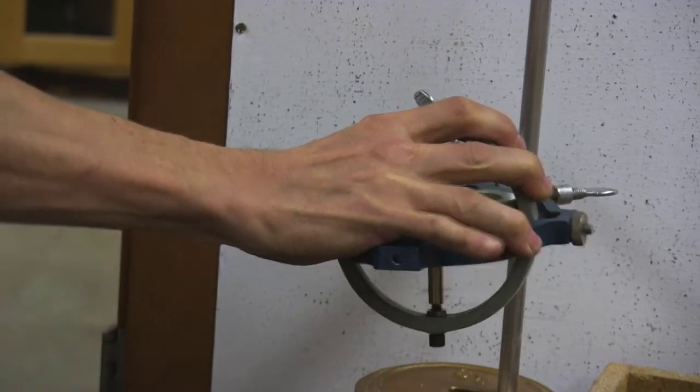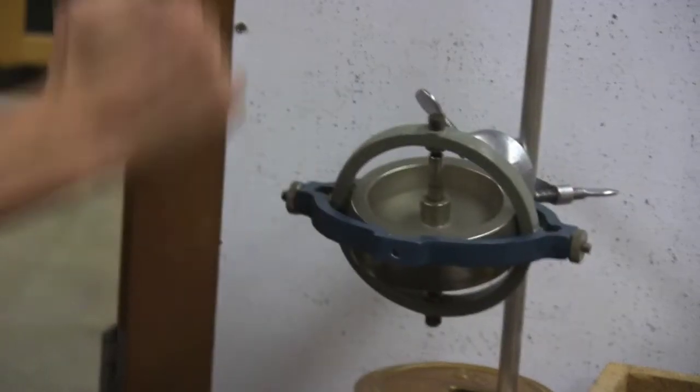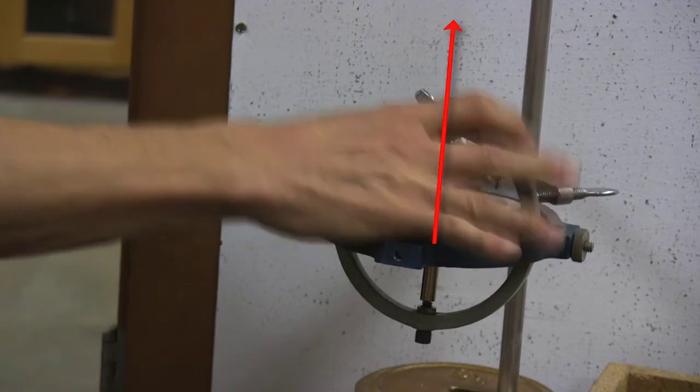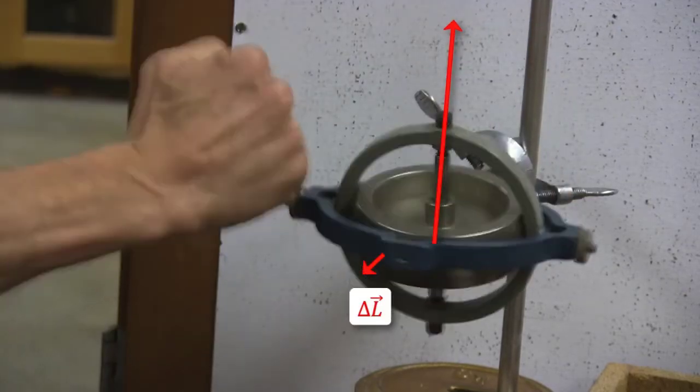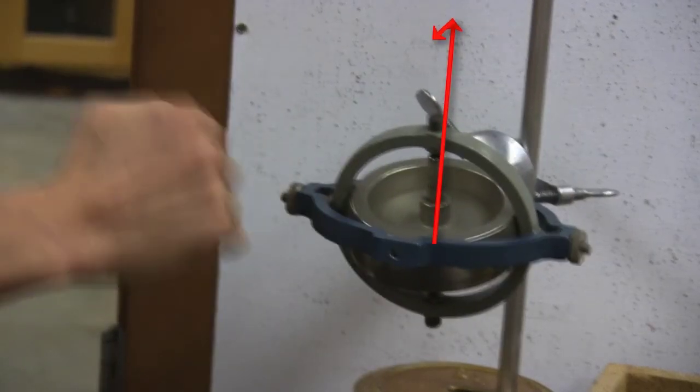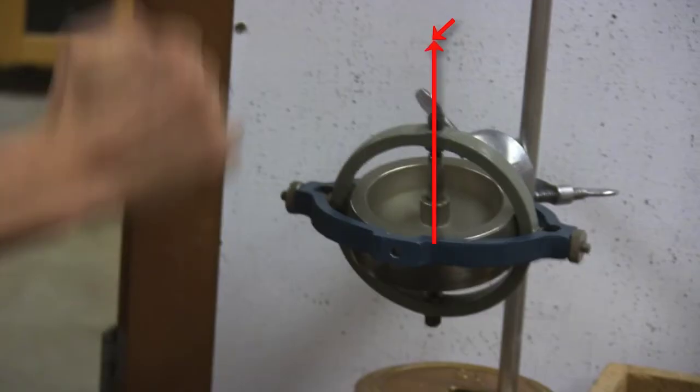if the gyroscope is already spinning, it has a large initial angular momentum. And the angular impulse I give it is added to its initial angular momentum, changing its direction only slightly.